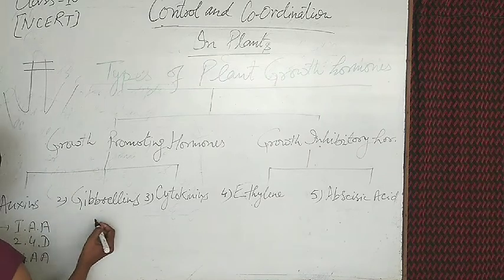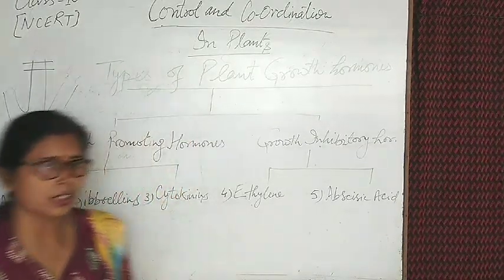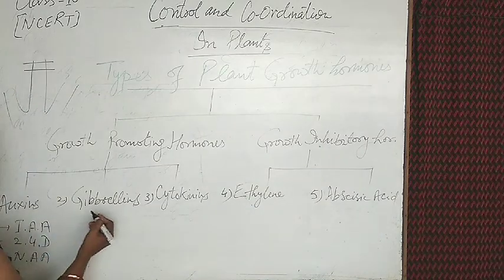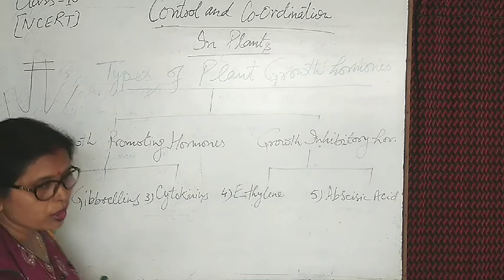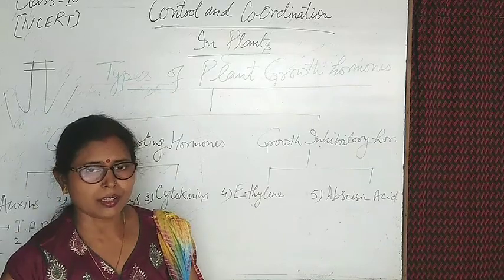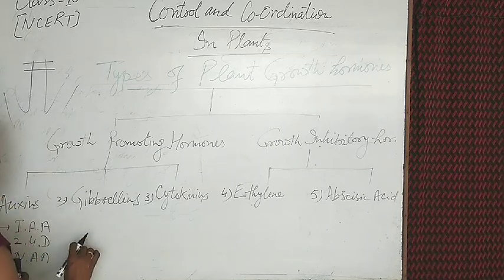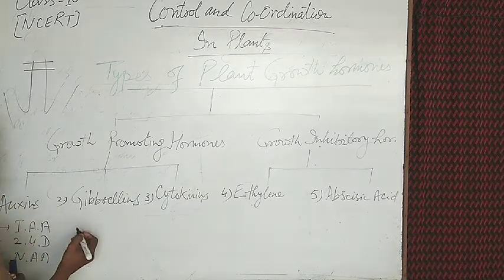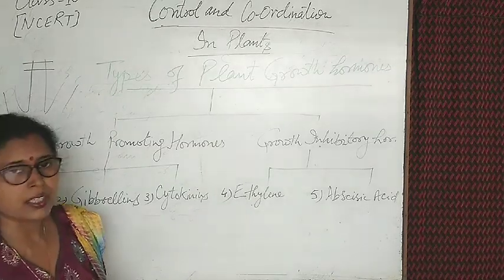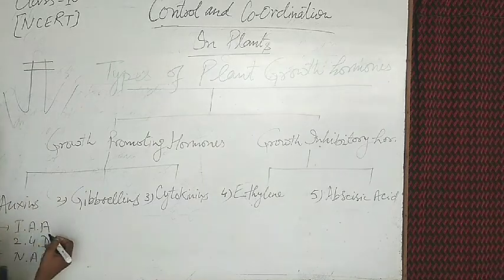Gibberellin is derived from Gibberella fujikuroi, a type of fungus. It is extracted from this natural fungus and is responsible for bolting — a type of disease affecting the nodal and inter-nodal parts — causing enlargement of the inter-nodal part. It is mostly used for the formation of bonsai, like indoor decoration pieces such as peepal or banyan trees.